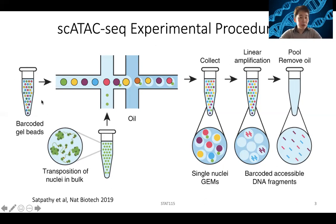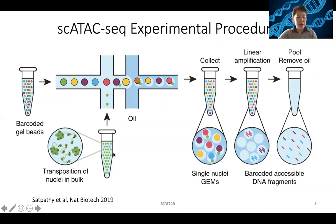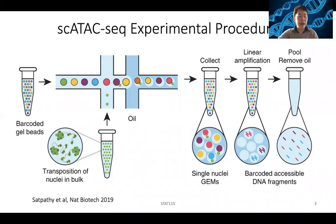The idea of single-cell ATAC-seq, at least with this system, is like this. Initially, you buy the reagent, which includes barcoded gel beads, so every cell gets different barcodes. If you have a collection of cells, those cells need to be made into a single-cell suspension or single-cell nuclei in solution. The cells can be treated with transposase to cut and insert sequences. Then in this 10X Genomics machine, you run the gel beads and the single-cell nuclei through the machine at the right speed.